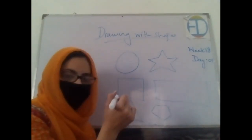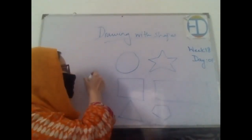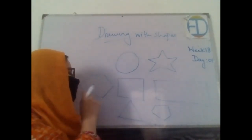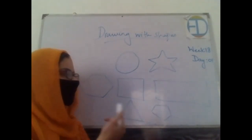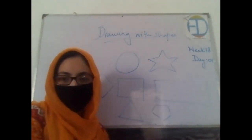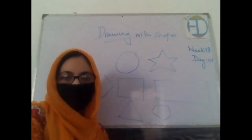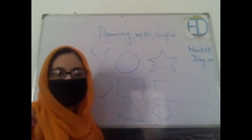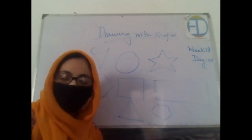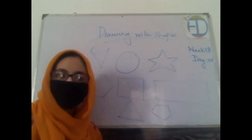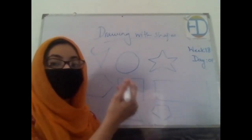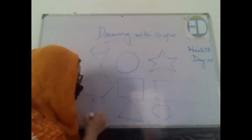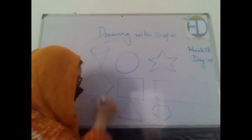Then we have a pentagon. A pentagon basically has five sides. Then we have a hexagon — a hexagon basically has six sides. What other shapes do you know? We know about a cone. This is a cone. We also know about the cylinder — let me draw it. This is a cylindrical shape.